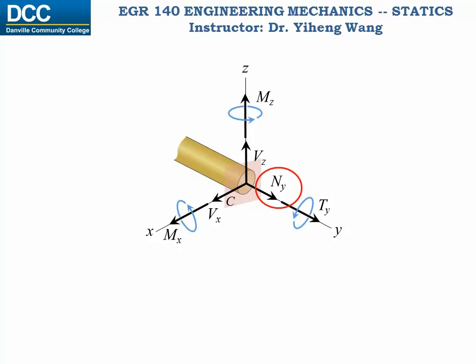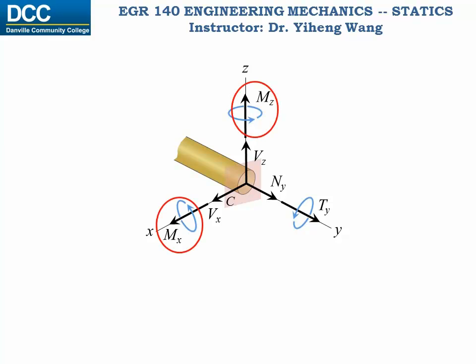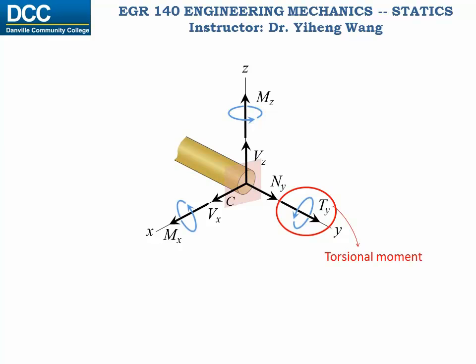For the 3D case, you have one normal force along the axial direction perpendicular to the cross section, two shear forces tangent to the cross section, two bending moments, and one torsional moment that creates a twisting effect in the member. As you will learn in mechanics of materials, these different internal forces cause different types of stresses, deformations, and even failures in the members.